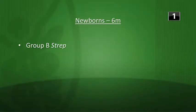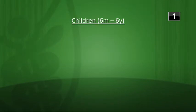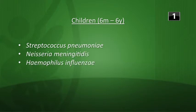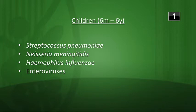In newborns this is going to be Group B Strep, E. coli, and Listeria. In children six months to six years, you have Strep pneumo — you're going to have Strep pneumo across all the age ranges really. In this age range you also have Neisseria meningitidis, H. influenzae, and enteroviruses.